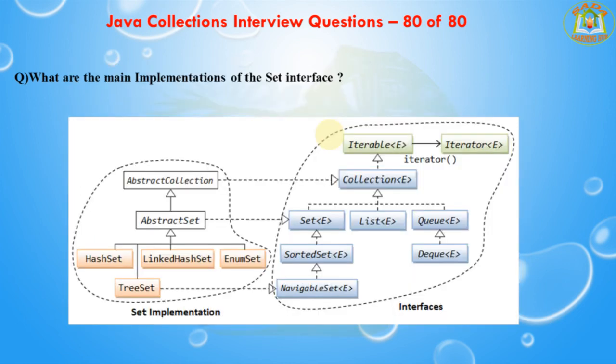The next question is what are the main implementations of the Set interface? The main implementations of the Set interface are: HashSet, TreeSet, LinkedHashSet, and EnumSet. There is also SortedSet, UnsortedSet, and NavigableSet. These are the major implementations of the Set interface.